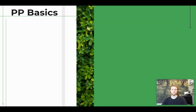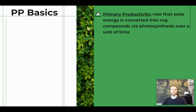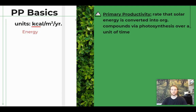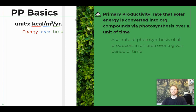Now we'll talk about some of the basics of primary productivity. It's just the rate that solar energy or light is transformed into organic compounds like glucose or cellulose through photosynthesis over a period of time. The units we use to measure primary productivity are kilocalories per meter squared per year — always expressed as a measure of energy per given area per given time.